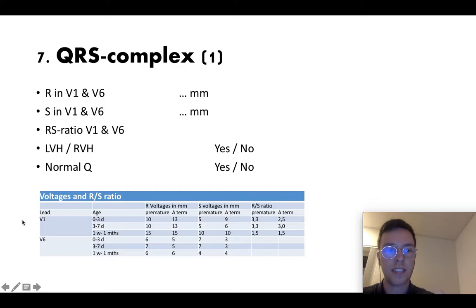Here I added a table with the voltages and the RS ratio. So for example if you're checking R in the lead V1 for a child of one month it should be 15 millimeters and so on.